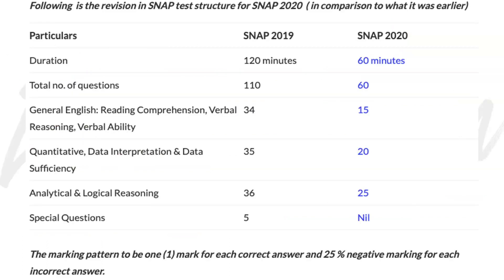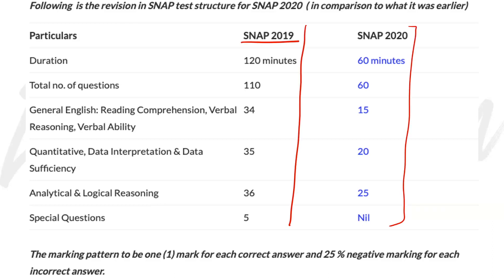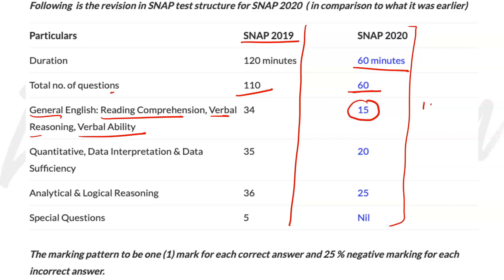Now let's look at the SNAP 2020 pattern. This is the SNAP 2019 pattern for reference. The exam has become very short — just 60 minutes. The total number of questions has been reduced from 120 to 60. Under General English, which includes Reading Comprehension, Verbal Reasoning, and Verbal Ability, there are only 15 questions.